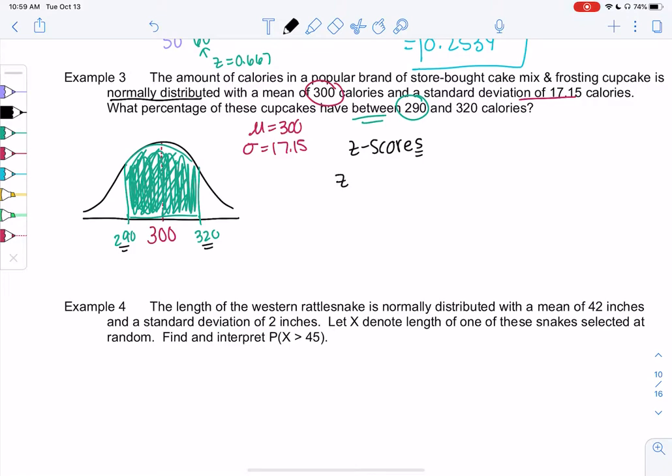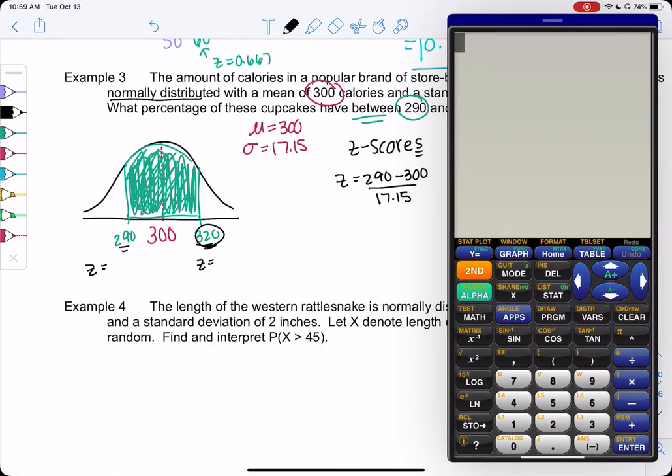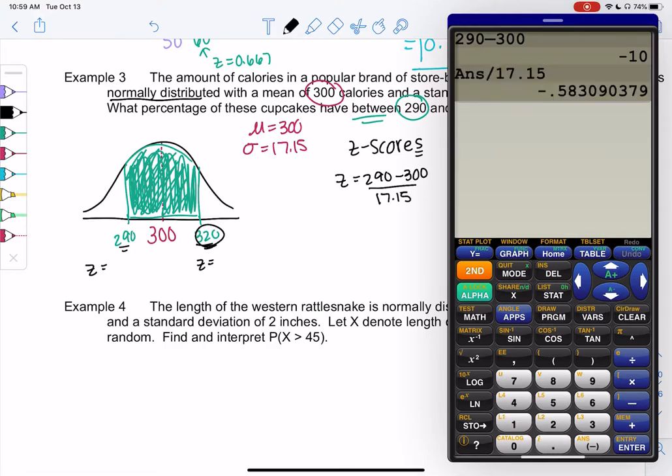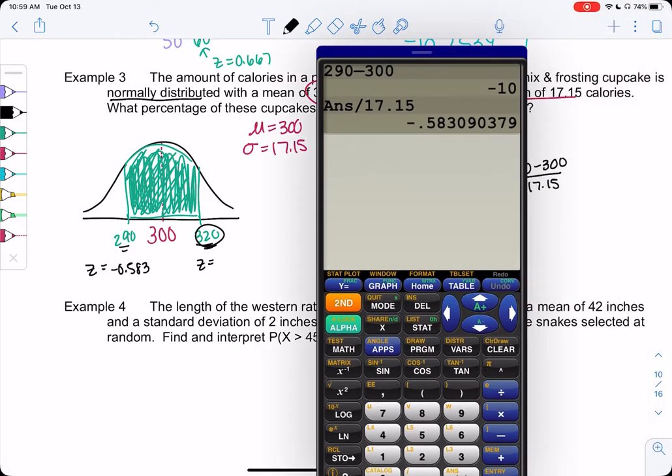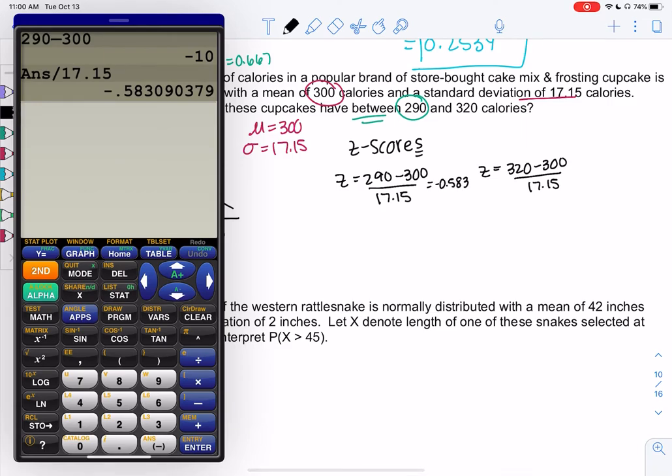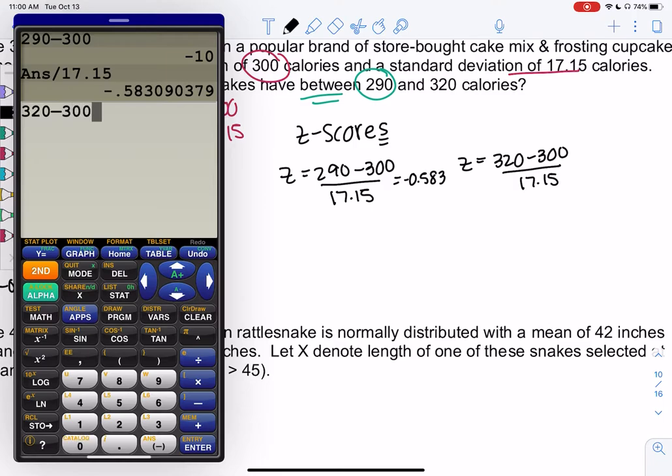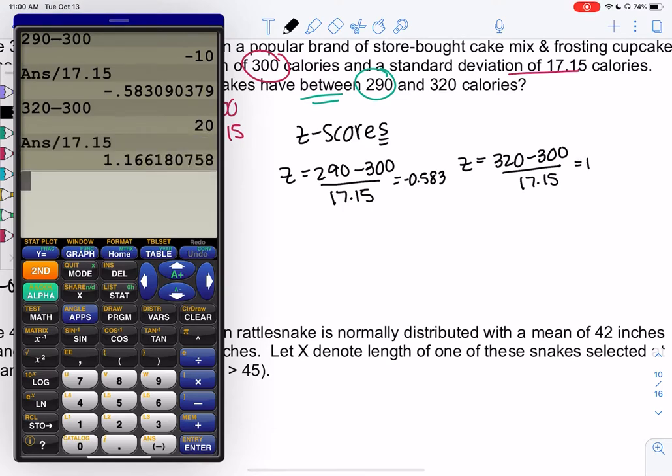So we have z equals 290 minus 300 over 17.15 and then my other z-score will be 320 minus 300 over 17.15. So let's find those two z-scores. 290 minus 300 divided by 17.15 and I get about negative 0.583 for the first one. Second one we'll do same thing, 320 minus 300 divided by 17.15 and we get a z-score of about 1.166.